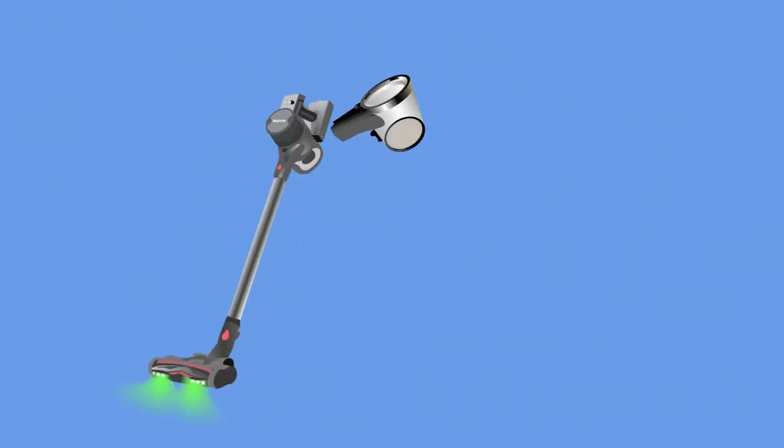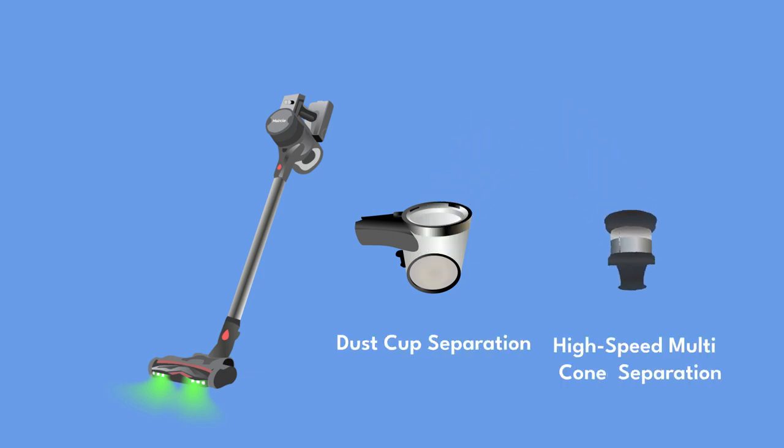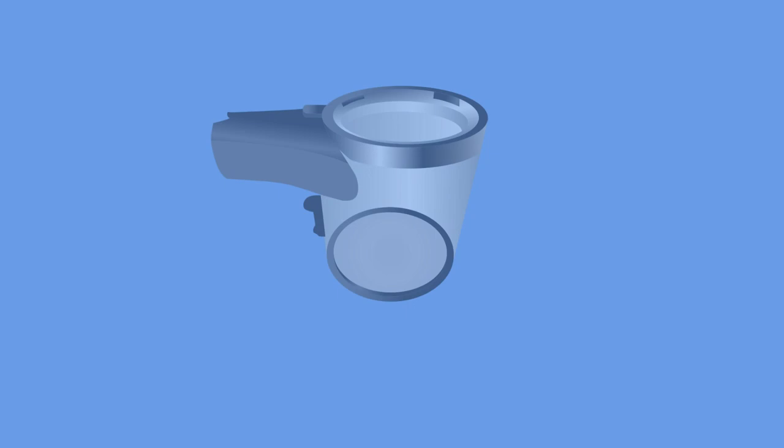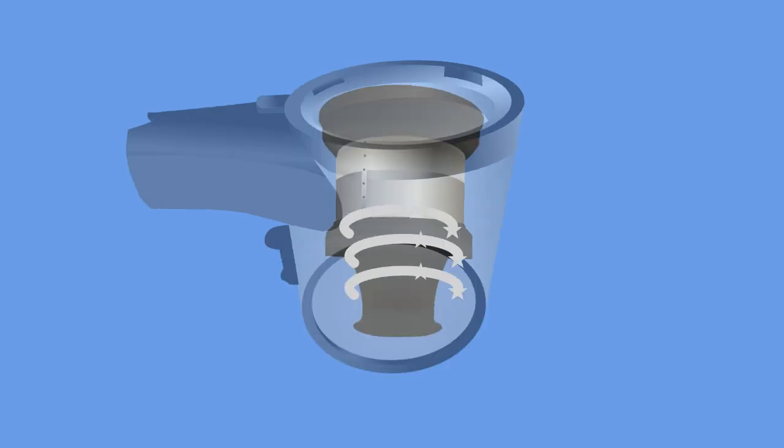Its separation system comprises two parts, namely dust cup separation and high-speed multi-cone separation that work together to separate both particulate dust and gas, with a separation efficiency of 99.97%.